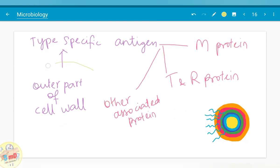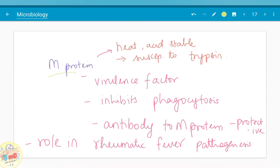The outer part of the cell wall has some type specific antigens. These antigens as we saw already are M protein, T and R protein. Remember the masala and globe jamun mix MTR. Other associated proteins are also present. The M protein is heat and acid stable. It is susceptible to trypsin and it is one of the major virulence factors.